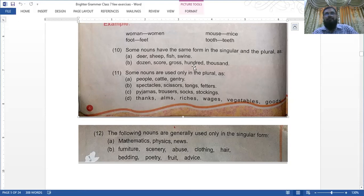Number eleven: some nouns are used only in the plural: people, cattle, gentry, spectacles, scissors, tongs, fetters, pajamas, trousers, socks, stockings, thanks, alms, riches, vegetables, goods. Number twelve: the following nouns are generally used in the singular form: mathematics, physics, news, furniture, scenery, abuse, clothing, hair, bedding, poetry, fruit, advice. They are usually considered as singular.